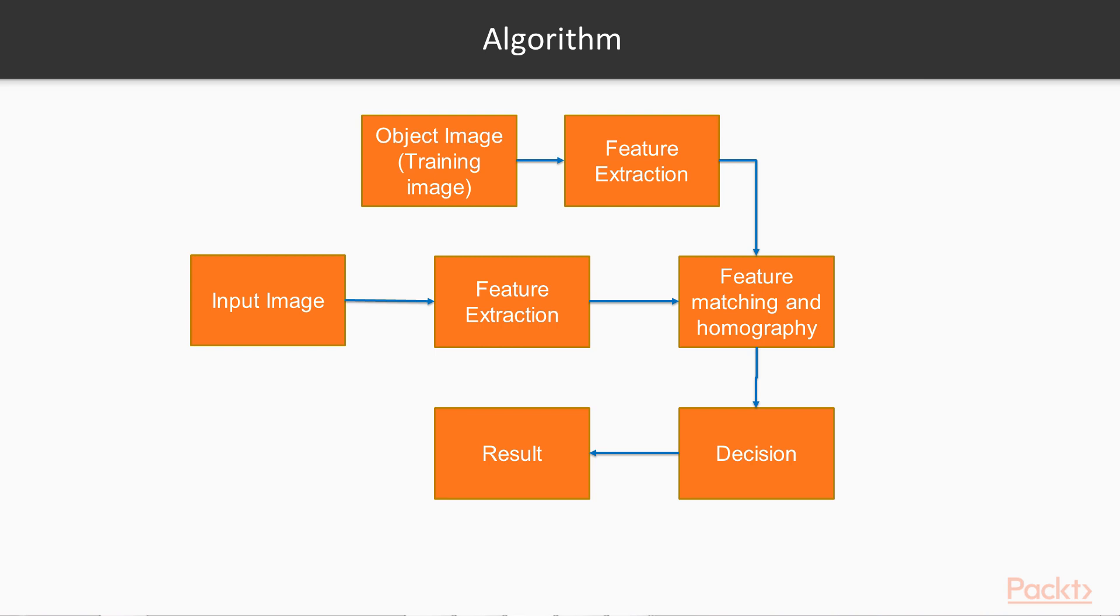Now the features can be anything such as SIFT, SURF, or others. Then we take a test image. Now this is the image we want to test whether the object is present or not in this image. And we do the same—that is, perform feature extraction.